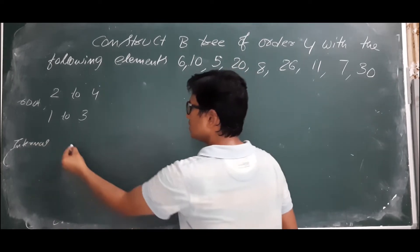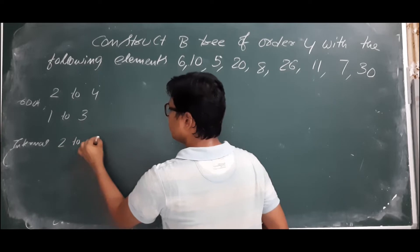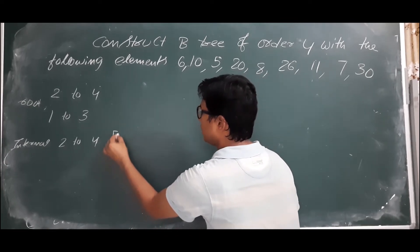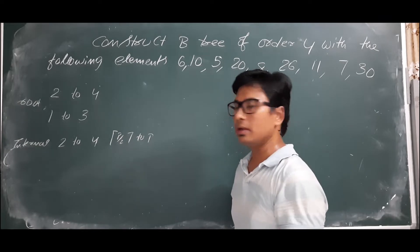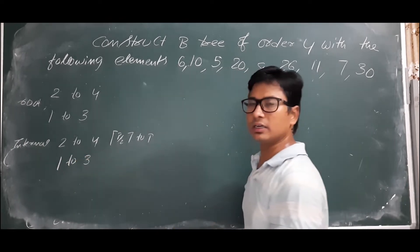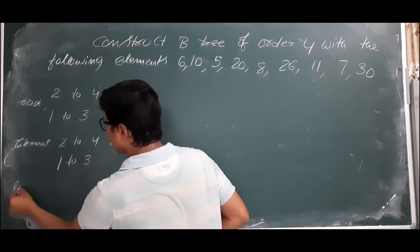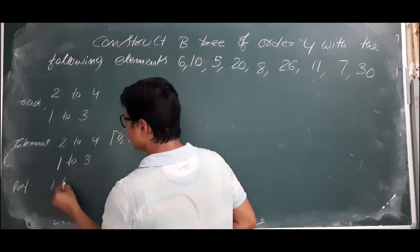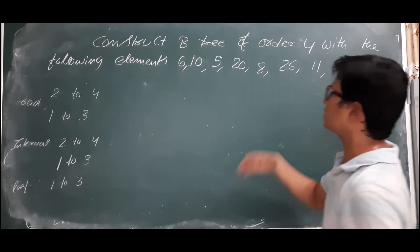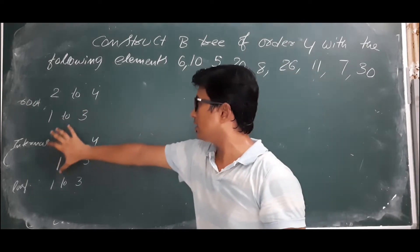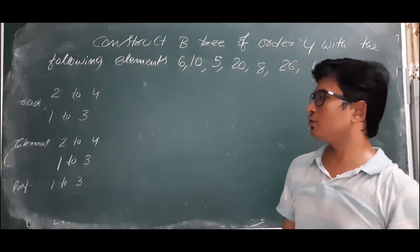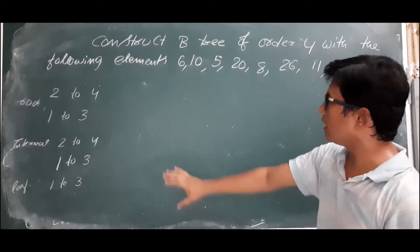The internal node can have p/2 to p children, meaning a minimum of 2 and a maximum of 4 children, with a minimum of 1 key and a maximum of 3 keys. The leaf node can have 1 to 3 keys. Before constructing the B-tree, given the order, you should calculate the minimum and maximum number of keys and children for the root node, internal node, and leaf node.